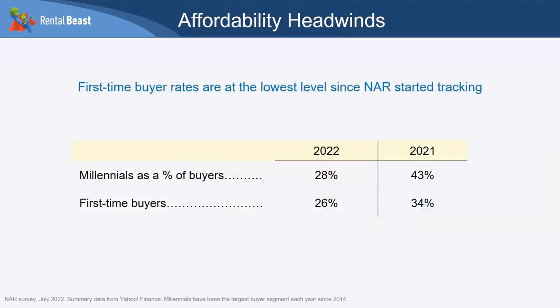NAR released a sobering report earlier this year: first-time buyer rates are at the lowest level since NAR started tracking them. Millennials as a percent of buyers saw a 15-point drop year over year from 2021 to 2022. First-time buyers dropped about 10 percent. It's important to understand — this isn't necessarily because they don't want to buy; the market is just very hard to buy in right now.